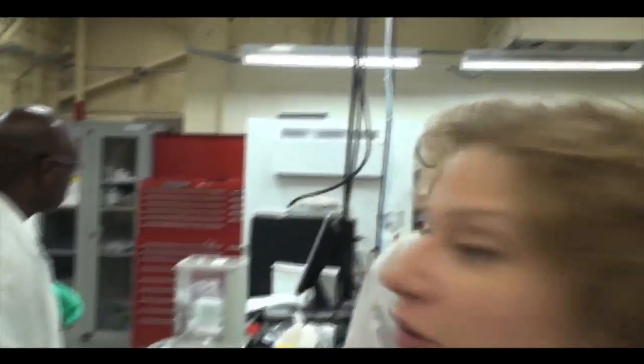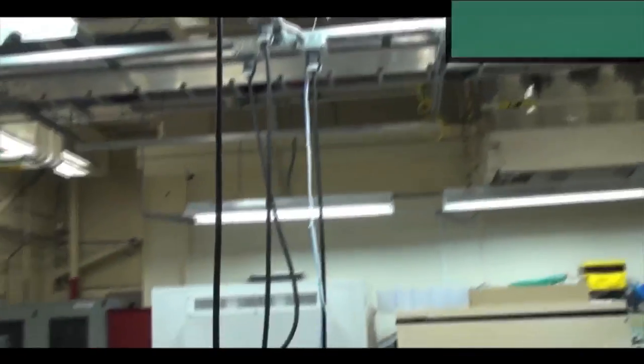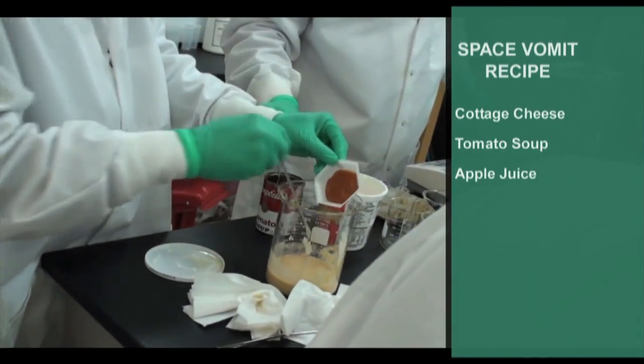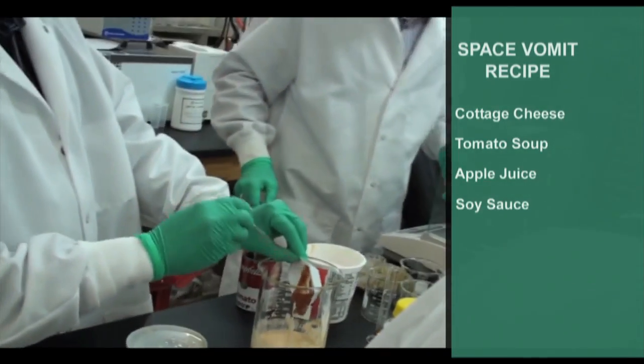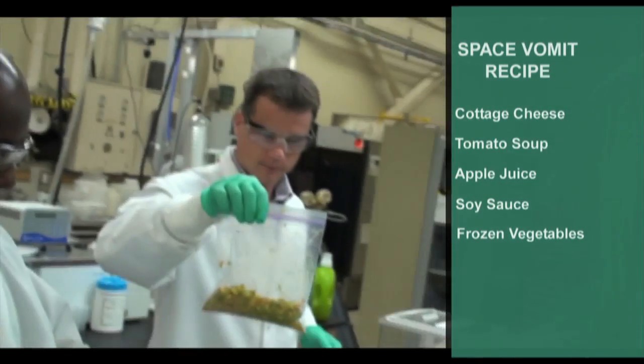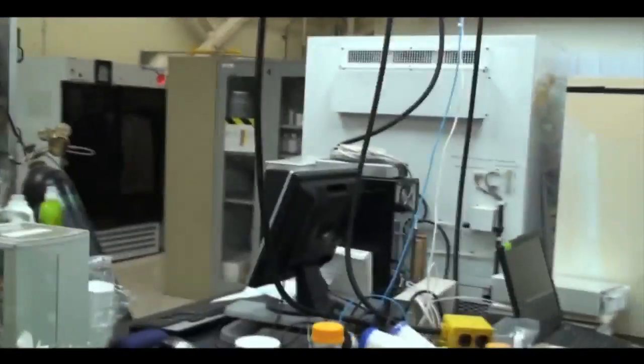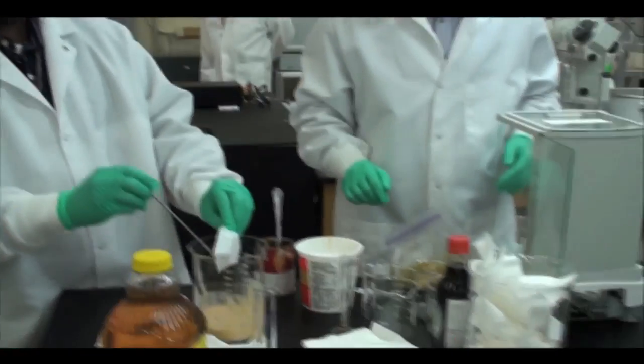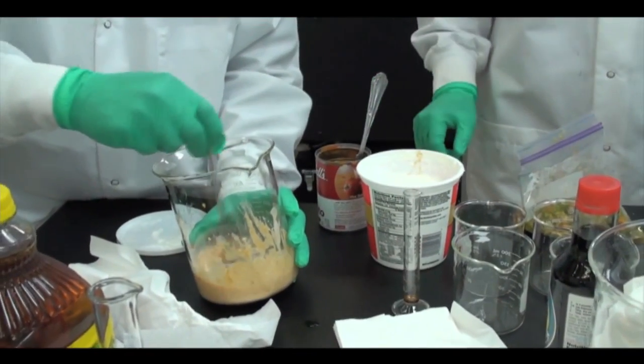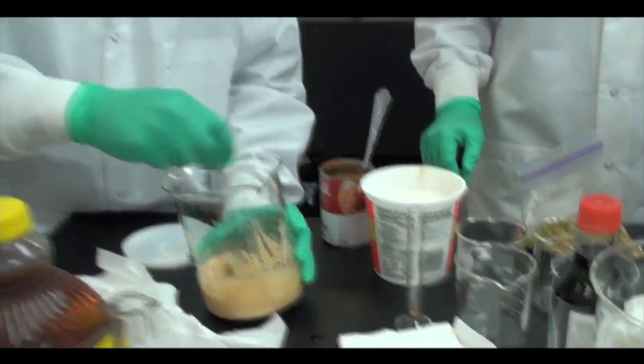Let's see what they're doing. We're doing the food part of the mixture. We basically have some pureed cottage cheese, some tomato soup, some apple juice, some soy sauce, and then some chopped up mixed frozen vegetables. Those are the various food products that were in the medical research, so we're getting the consistency just about right here, at which point then we'll add the smell.